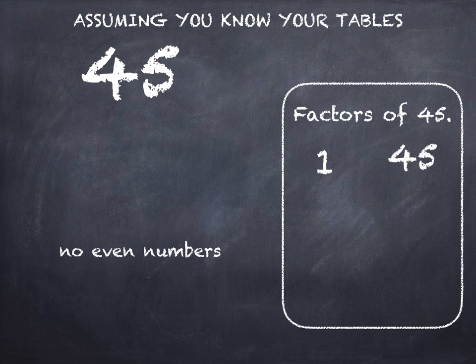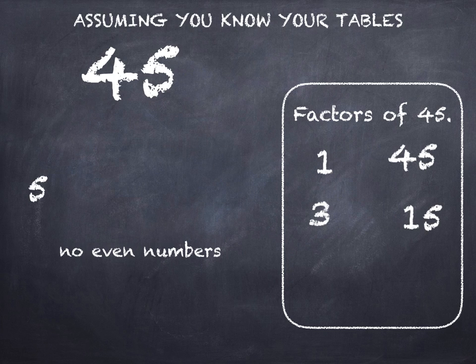There are no even numbers that I can multiply together to make 45. 3 and 15. 5 and 9.